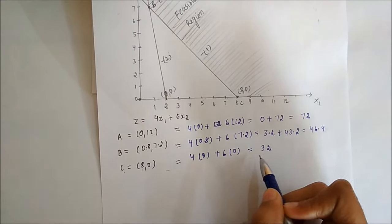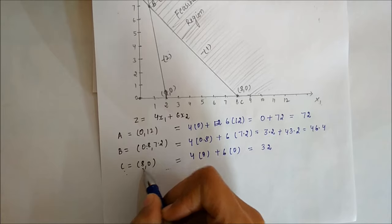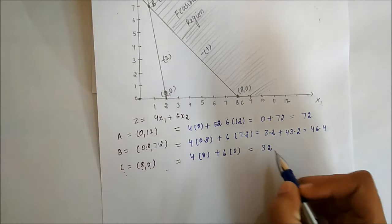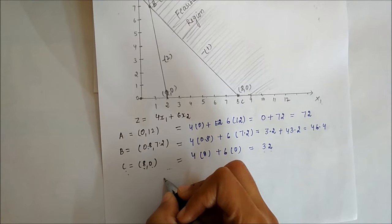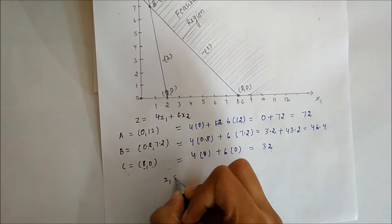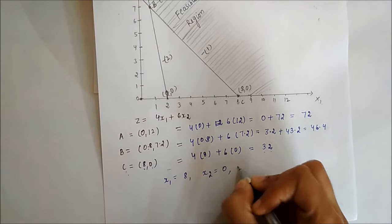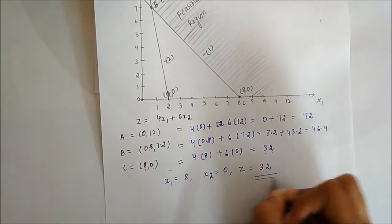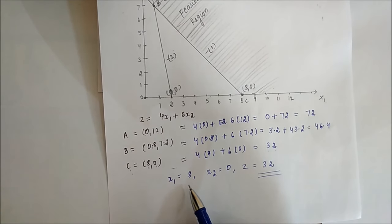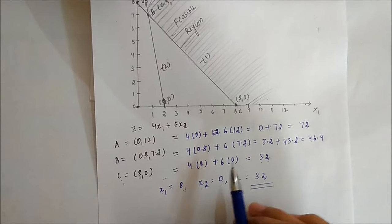So the minimum cost is at point c. At x1 equals 8 and x2 equals 0, the objective function z equals 32. The optimum solution is: x1 equals 8, x2 equals 0, and z equals 32. This completes the question.